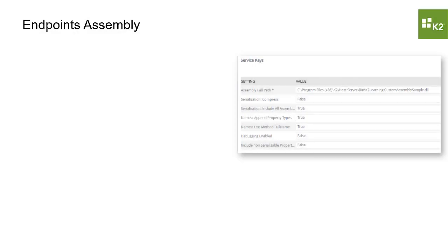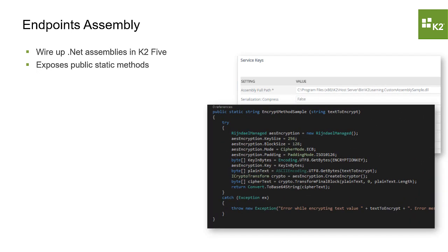The endpoints assembly service type enables you to wire up .NET assemblies in K2.5 by exposing their public static methods as smart object methods that can be made available to smart forms and workflows. This service type is only available to K2.5 instances where you have control over your K2 server and can install assemblies to the K2 host server bin folder. This capability is helpful when you have an external data source that you want to integrate with K2.5 and there are no APIs available other than using a DLL library.